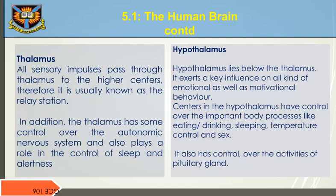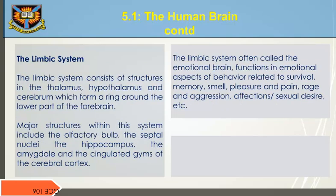The hypothalamus lies below the thalamus. It exerts a key influence on all kinds of emotional as well as motivational behavior. Centers in the hypothalamus have control over important body processes like eating, drinking, sleeping, temperature control, and sex. It also has control over the activities of the pituitary gland.